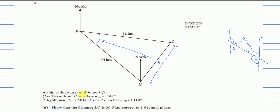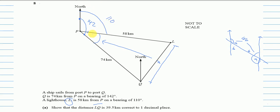Q is 74 kilometers from P on a bearing of 142°. Starting from P's north going clockwise toward Q, the full angle is 142°. From P's north again, L is on a bearing of 110°. So the whole angle to Q is 142°, and the part to L is 110°, meaning the remaining angle between the two directions is 142° − 110° = 32°.